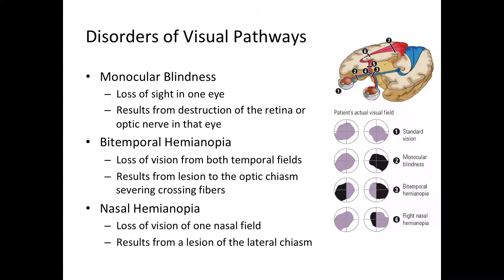The first condition is monocular blindness — the name says it all. That corresponds to lesion number two: a lesion of the optic nerve. Whenever you have a lesion of one optic nerve, you will have loss of sight in one eye. In the visual field diagram, the black area shows where you'll be blind. If you cut the right optic nerve, the right eye will not see anything.